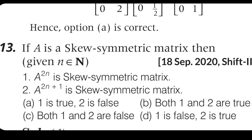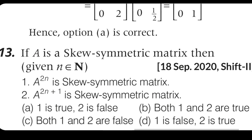A to the power 2n is a skew matrix, and A to the power 2n plus 1 is a skew matrix. So condition A is true and B is false. Looking at the options: first condition true and second false; option B both true; option C both false; option D first false, second true.